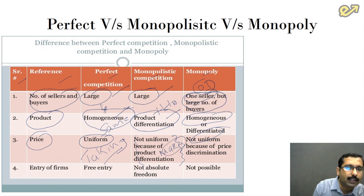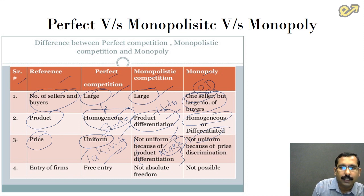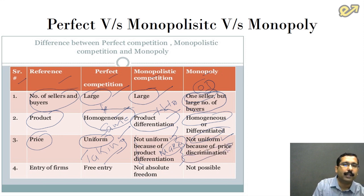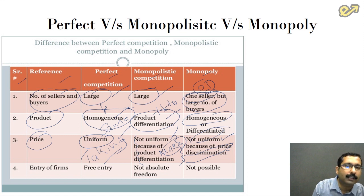This is very important and can be an MCQ question: perfect competition is a price-taking market, whereas monopolistic competition is a price-making market. When it comes to monopoly, the price can either be uniform across the market or there can be price discrimination — very important, please remember this. What is the pricing technique in a monopoly market? It can be price discrimination.